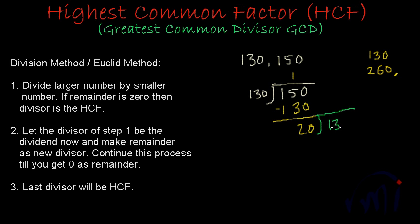So now I have to divide this 130 by 20. So when I divide this 130 by 20, 26 or 120. And now I get the remainder as 10. And now this remainder will become the new divisor and this 20 will become the new dividend.